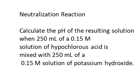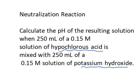First, before you do anything, think about what you're reacting. Hypochlorous acid is a weak acid. Potassium hydroxide is a strong base. When you react an acid with a base in such a way, the reaction goes to completion.